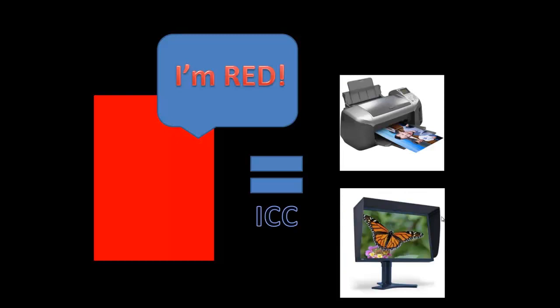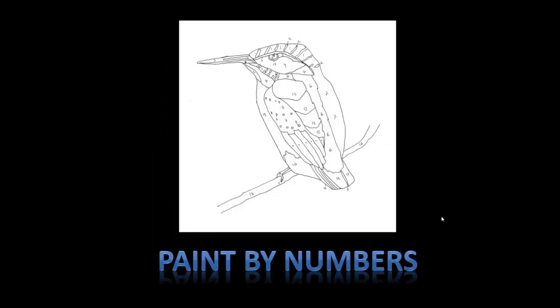ICCs ensure your devices are not playing broken telephone and messing up your images. It's a way for your image to talk to your monitor and your printer. These profiles make sure that when your image says it's red, your monitor displays red and your printer prints red. The ICC takes your image and translates it to the correct language that your monitor, printer, and scanner are speaking.